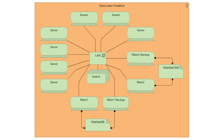For basic use cases, there's no benefit in choosing UML over Archimate or the other way around. However, Archimate allows you to model a bit more thanks to additional elements like communication network, path, or location to show physically how network and infrastructure are organized.